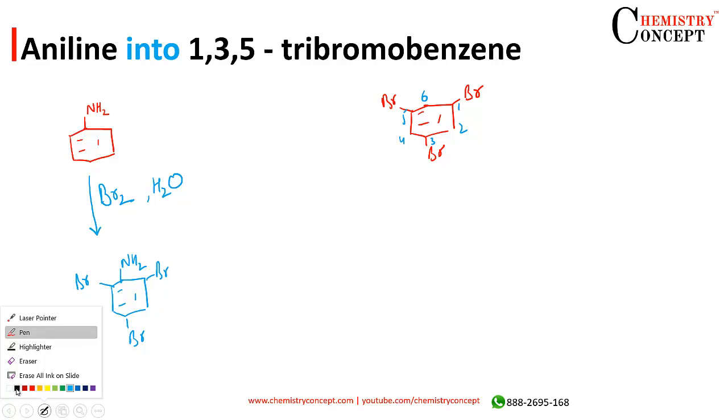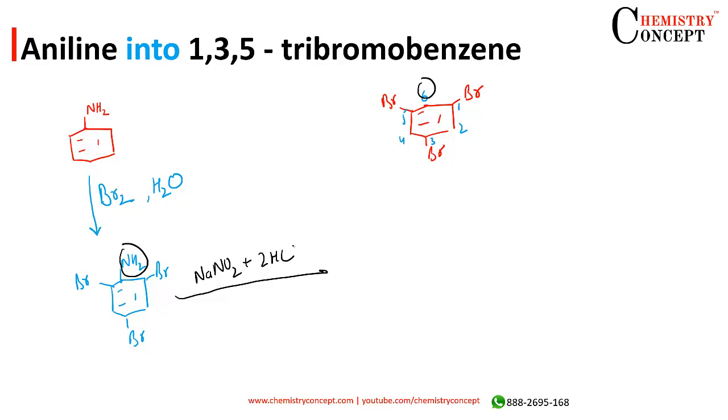Now if you compare this compound with product, you will realize all we need to do is to replace NH2. Now this can be done. Convert this into Dizonium salt: NaNO2 plus 2 moles of HCl at 0 degree to 5 degree Celsius. When we do this, the NH2 will convert into N2Cl, rest will remain 3-bromobenzene.